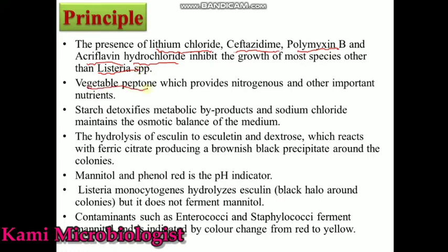The presence of vegetable peptone will provide nitrogen and other nutrients needed for the growth of Listeria monocytogenes. We have starch which is detoxifying the metabolic products, and then we have sodium chloride that can maintain the osmotic balance in the media. Then we have esculine which is converted into esculetin.